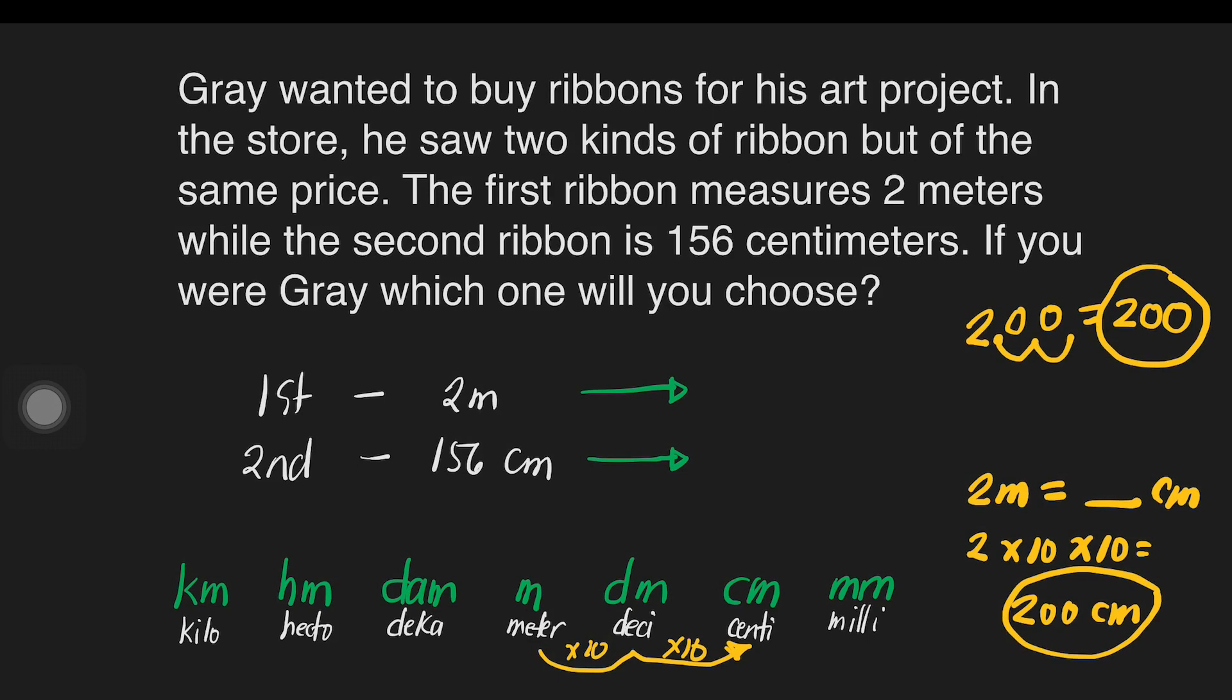So, it means 2 meters is equivalent to 200 cm and 156 cm. So, going back to the problem, if I were Gray, I will choose the first ribbon because it is longer compared to the second ribbon. The first ribbon is 200 cm while the second ribbon is only 156 cm. So, I will surely go for the first ribbon. Thank you.